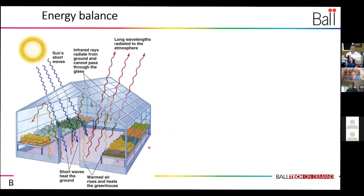That's heating up your crops and your greenhouse, and your crops start to send out long wave radiation to the atmosphere. But the incoming radiation is higher than the outgoing radiation, so that results in higher plant temperatures and also higher greenhouse temperatures.